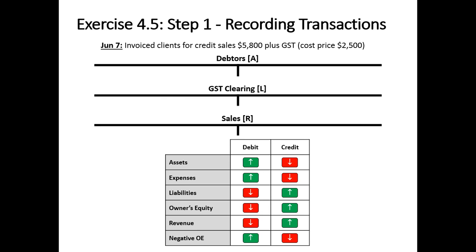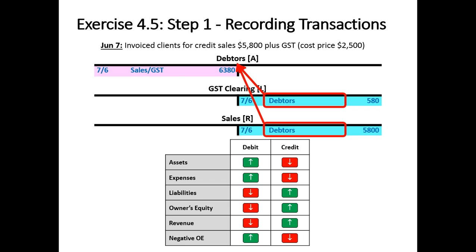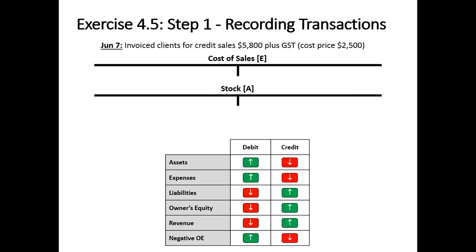June 7th: invoiced clients for credit sales of $5,800 plus GST, with a cost price of $2,500. This time instead of cash at bank going up, the asset debtors will go up $6,380 — which is the revenue of $5,800 plus GST of $580. We've charged GST so that increases our liability, and we've also made revenue which is a credit. The one debit matches the two credits. We reference sales slash GST, and the credit entries reference debtors.